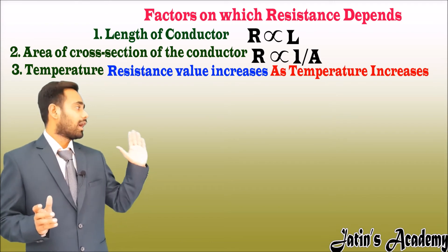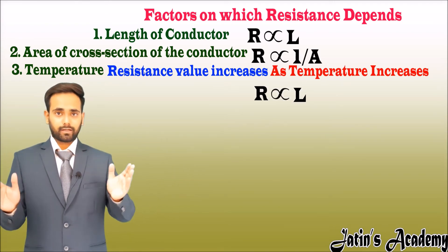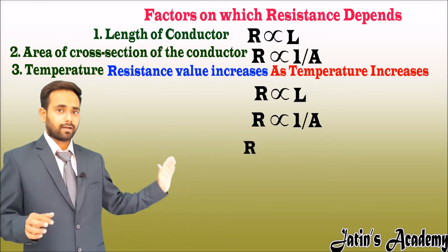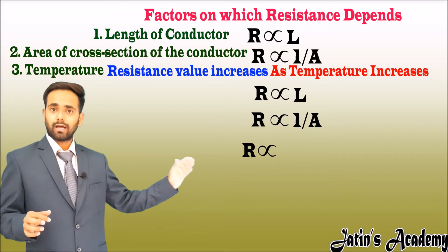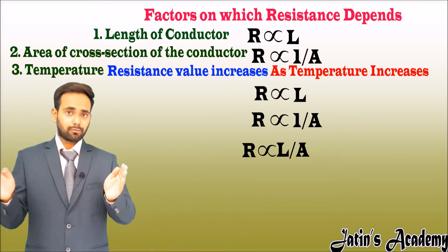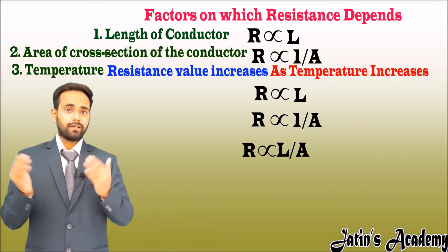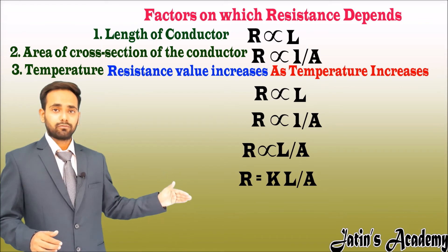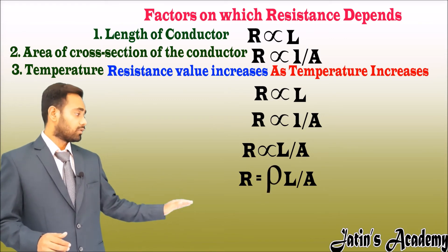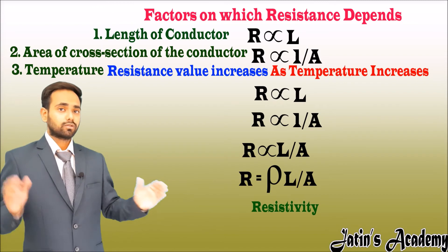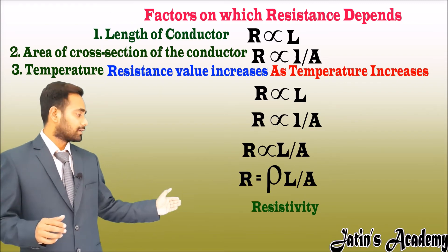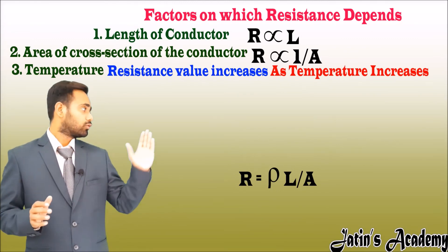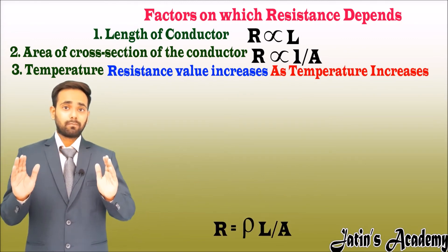Now let us sum up the first and second factors. In the first factor, R is directly proportional to L, and in the second factor, R is inversely proportional to A. Combining these, we get R is directly proportional to L over A. Changing the proportionality sign to an equals sign, we add a constant k, which is then replaced by a new constant called rho. So we get the formula: R equals rho times L over A, where rho is the resistivity.